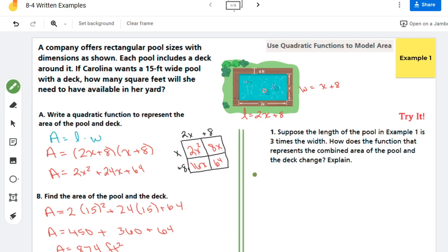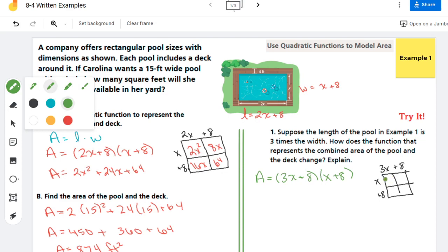So in terms of my formula, this turns into 3x plus 8 times x plus 8. And so when I go to do the box method, it's going to change two of my boxes. So here I get 3x squared. X times 8 is 8x. 8 times 3x is 24x. And 8 times 8 is 64. So my area formula is 3x squared plus 32x plus 64.